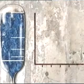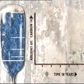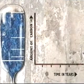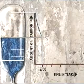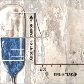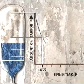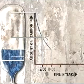If we plot the half-life as a graph, with the amount of carbon-14 on the vertical axis and time on the horizontal axis, it will look like this.